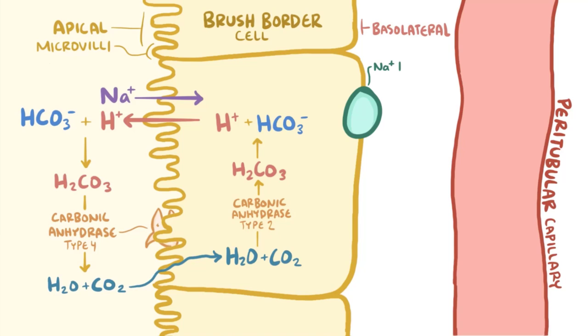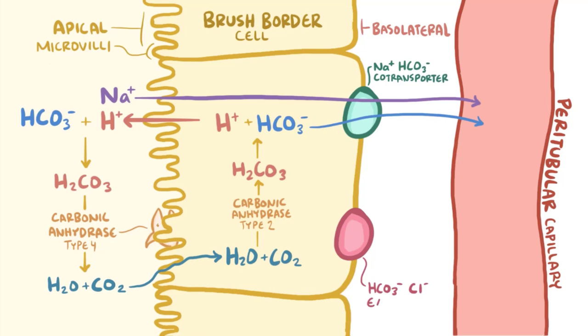A sodium bicarbonate co-transporter on the basolateral surface snatches up the bicarbonate and a nearby sodium, and then shuttles both into the blood. Alternatively, a bicarbonate chloride exchanger exchanges bicarbonate with chloride leaving the bloodstream to enter the cells. All this chemical trickery effectively moves 99.9% of the filtered bicarbonate that's in the tubule back into the bloodstream.